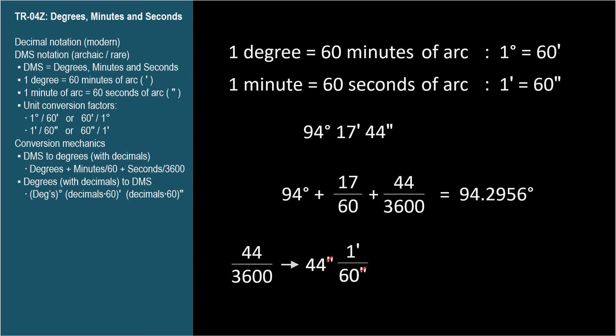We want to convert away from minutes, so we multiply by 1 degree per 60 minutes. Now the minutes cancel too, leaving us with 60 times 60 in the denominator, and the resulting units of degrees, just as we wanted.